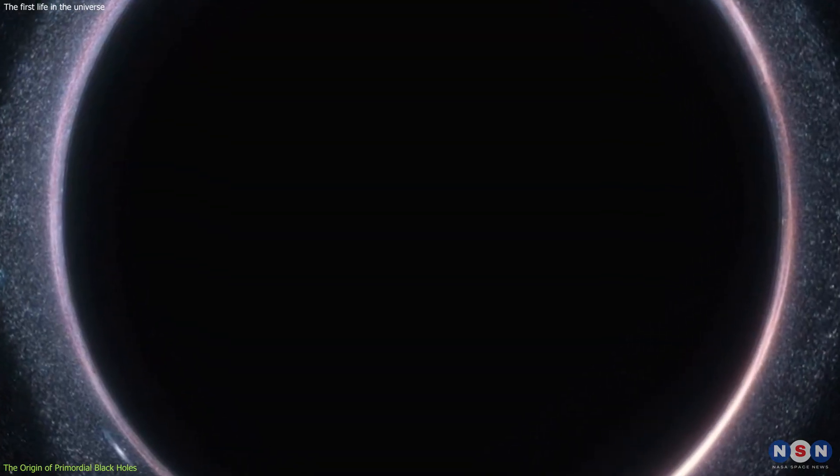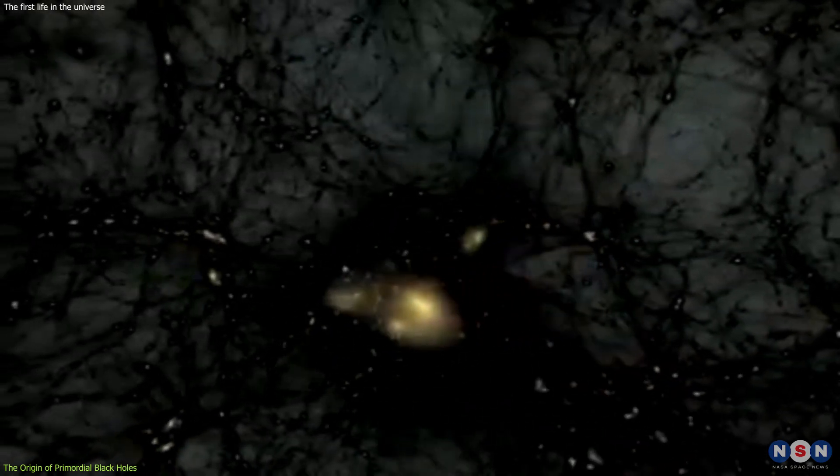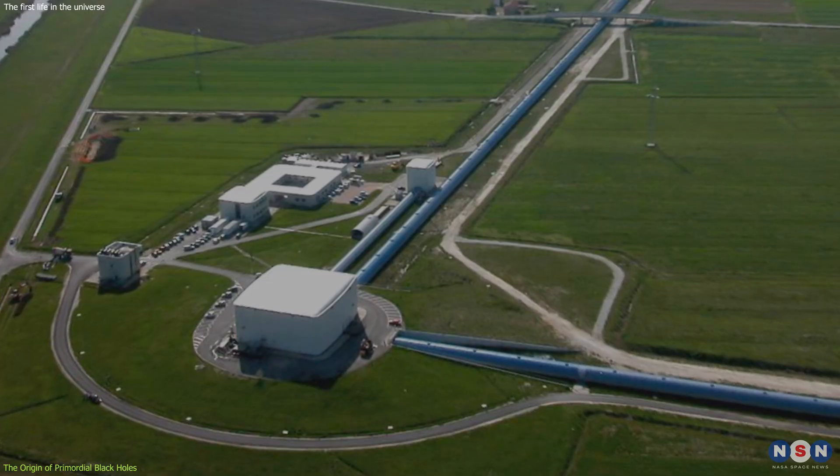For example, some astronomers have proposed that primordial black holes could be the source of the mysterious dark matter that makes up most of the mass of the universe. Others have suggested that primordial black holes could be responsible for some of the gravitational waves that have been detected by the LIGO and Virgo observatories.